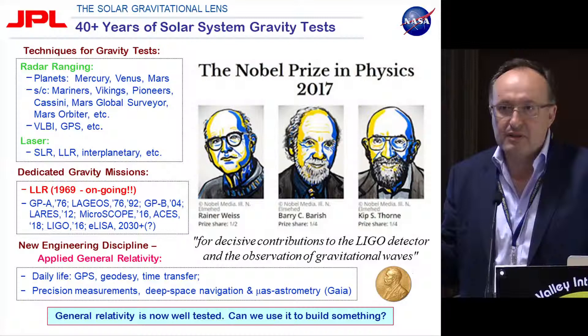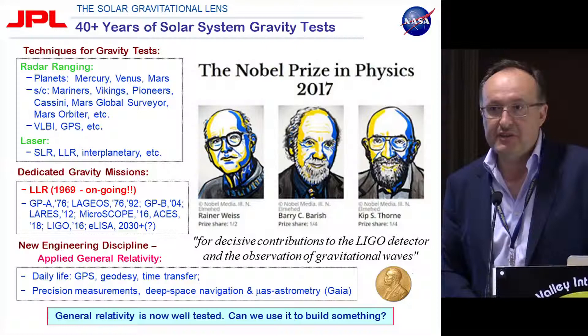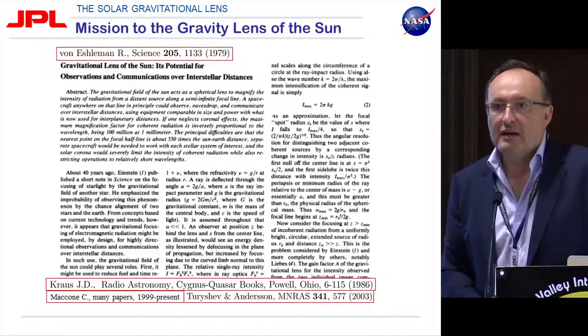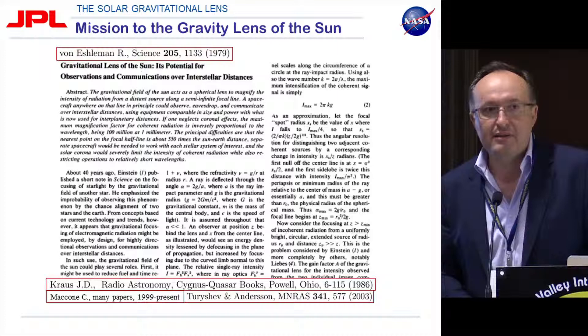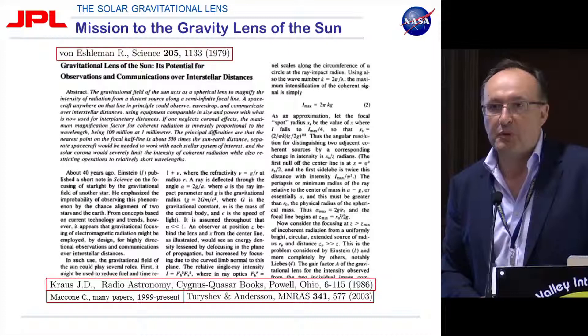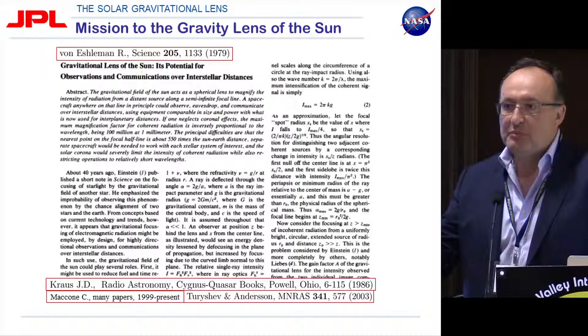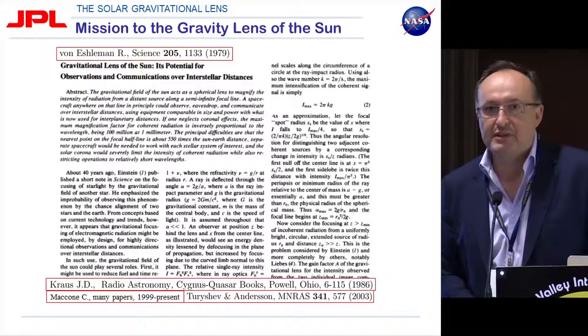The idea of using gravitation for studying the universe came as early as 1979 from a professor at Stanford University who was the chief of the radio science team on the Voyager spacecraft. He suggested we could use it for the purposes of interstellar communication. At that time, you would put a single-pixel detector in the focal area of the solar gravitational lens and use it for interstellar communication.